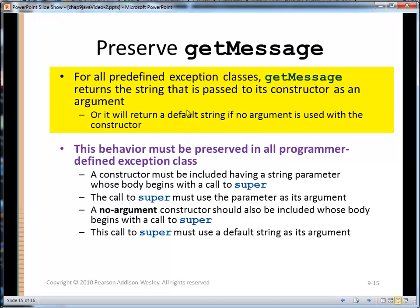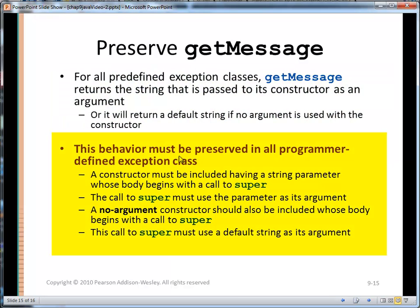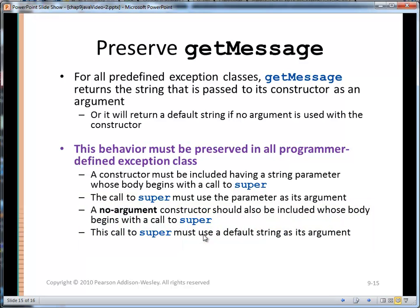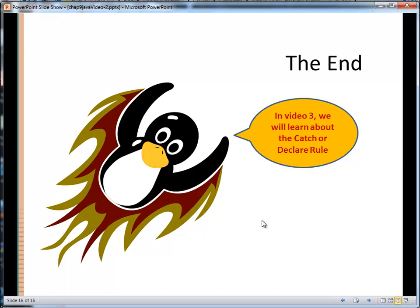A couple other guidelines: preserve getMessage — a lot of people are using it, it's an expected method to be able to call, and this behavior should be preserved in all programmer-defined exception classes. A constructor must be included having a string parameter whose body begins with a call to super, and the call to super must use the parameter as its argument. You should also have a no-arg constructor whose body begins with a call to super using a default string such as 'division by zero'. So creating our own exception class is pretty simple. In video three, we will learn about the catch-or-declare rule.